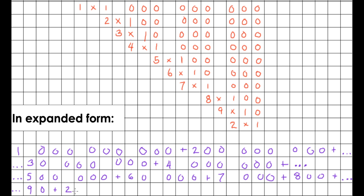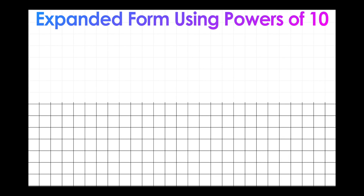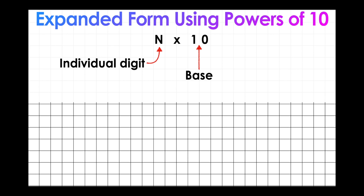Writing a large number in expanded form is really long and takes a lot of space. We can shorten this by writing our number in expanded form using powers of 10. To do this, we are going to write each individual digit multiplied by 10 to an exponent. So let's call each individual digit n — we're going to multiply n by 10, and that's our base. That base is going to have an exponent equal to the number of place value spaces after the digit. Let's take a look.